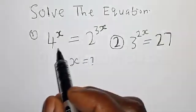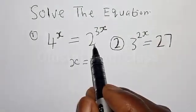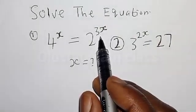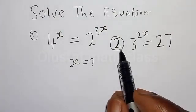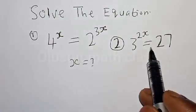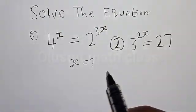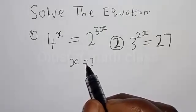Solve the equation. Number 1: 4 raised to power s is equal to 2 raised to power 3s. Number 2: 3 raised to power 2s is equal to 27. What is the value of s?